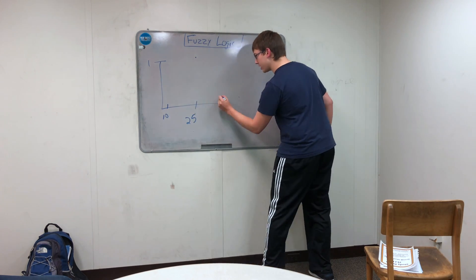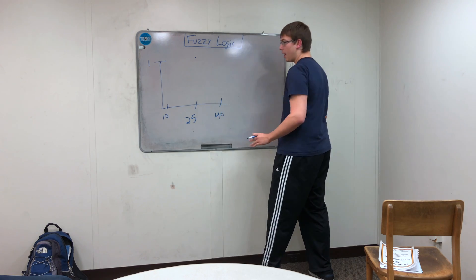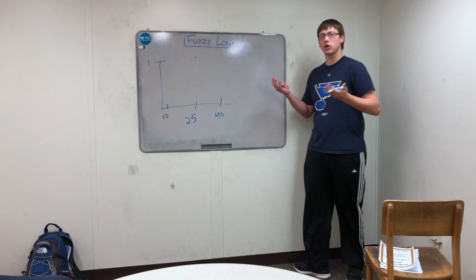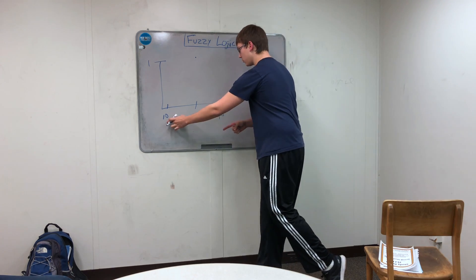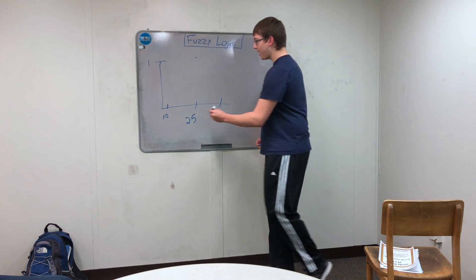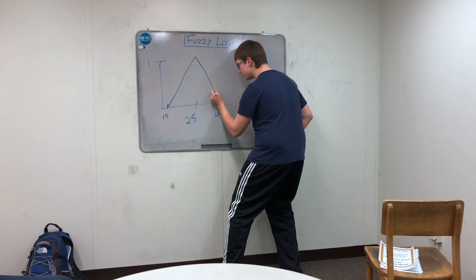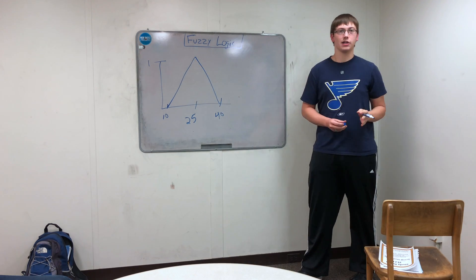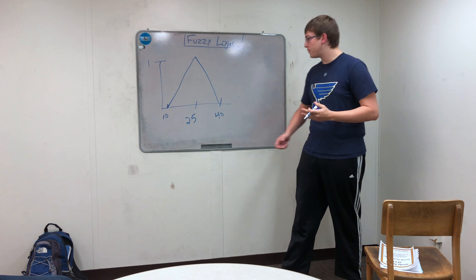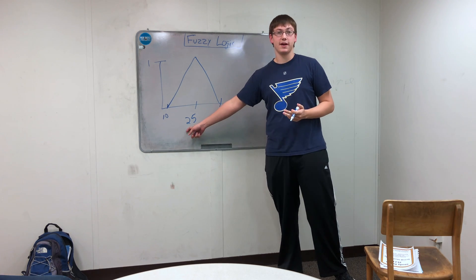And then again when you're 40, you're not at all 25 years old. But in-between here, you're more 25 years old than the 10-year-old or the 40-year-old. So we can model this with this function. And that is the core of fuzzy logic. Modeling to what extent do you belong to being 25 years old.